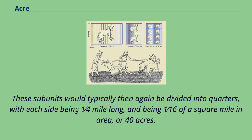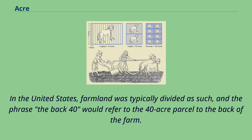In the United States, farmland was typically divided as such, and the phrase 'the back 40' would refer to the 40-acre parcel to the back of the farm. Most of the Canadian prairie provinces and the U.S. Midwest are on square mile grids for surveying purposes.